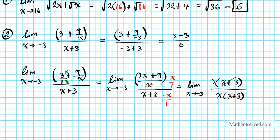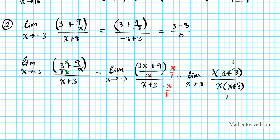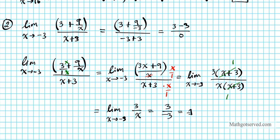So we have a cancellation happening — the (x plus 3) terms divide out, leaving the limit as x approaches negative 3 of 3 over x. Now I can substitute directly: 3 divided by negative 3 is negative 1. So the final answer is negative 1.